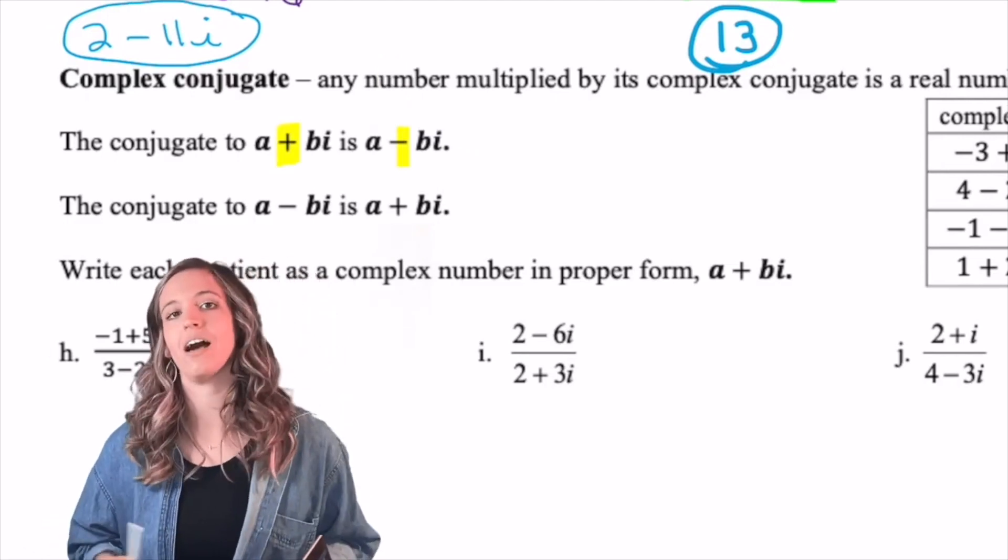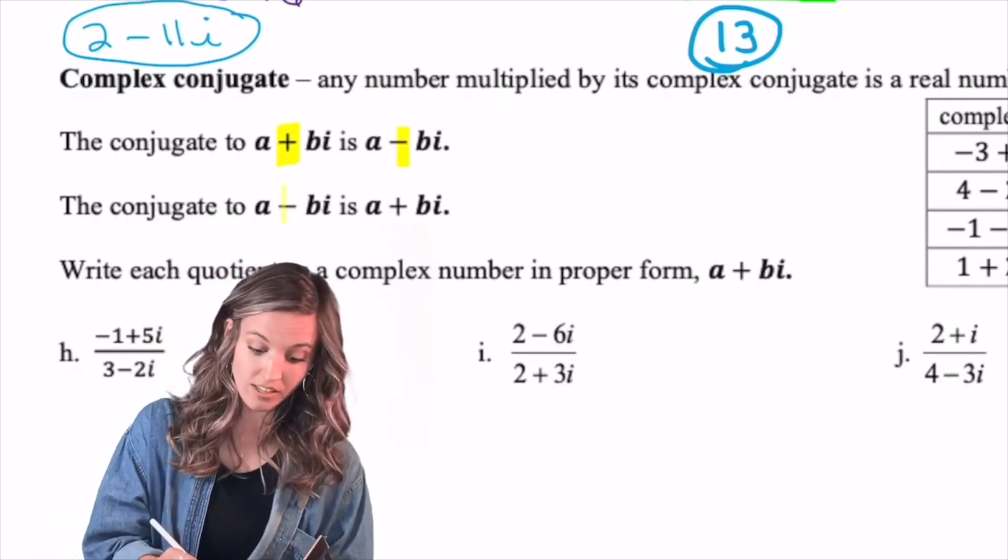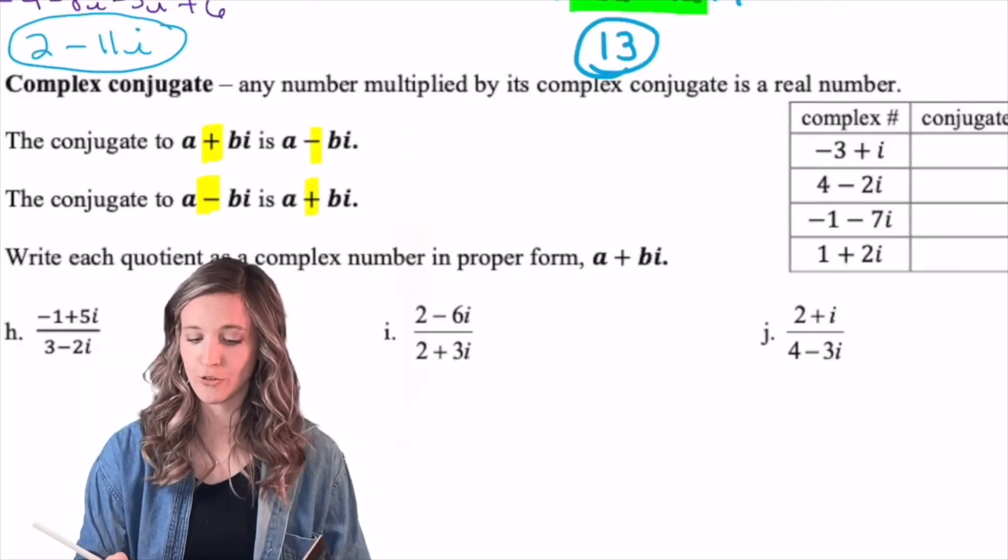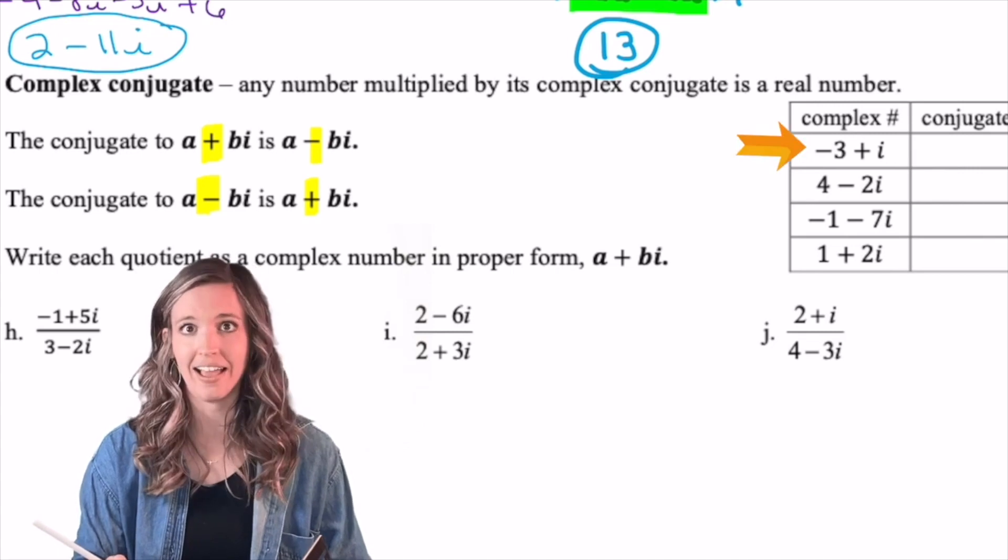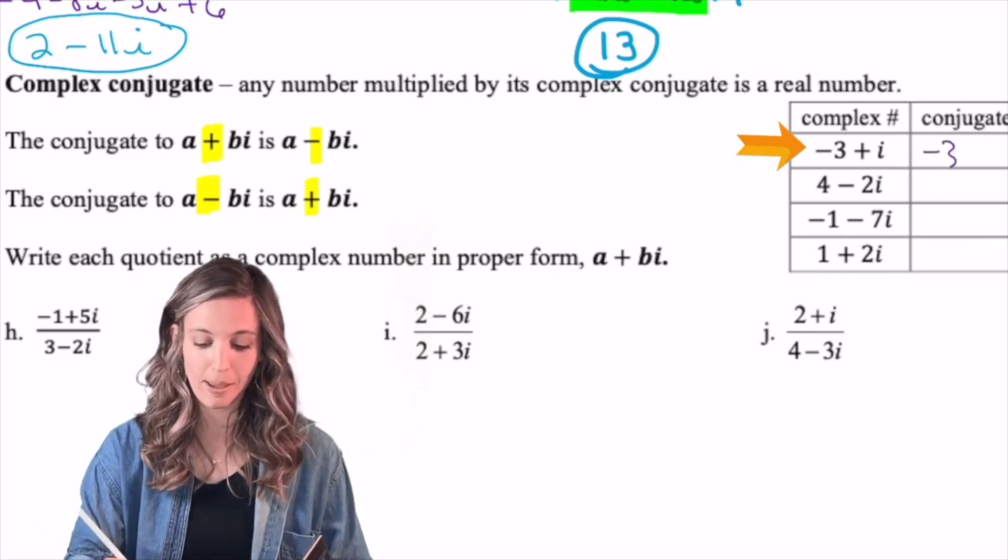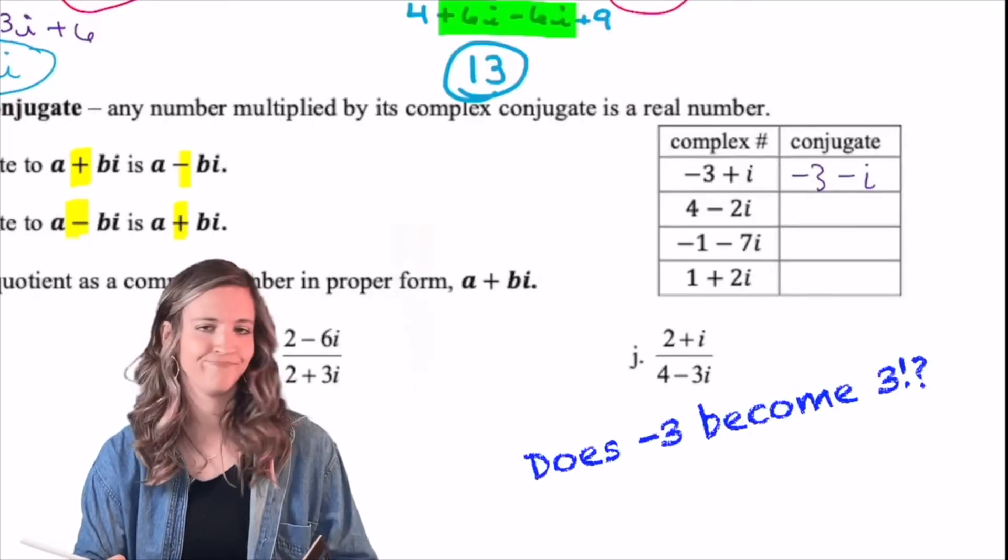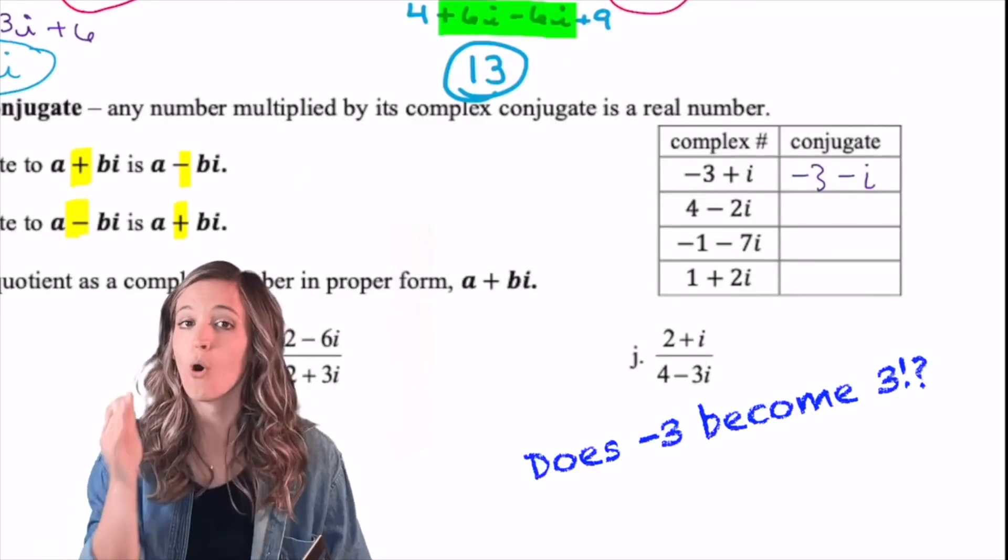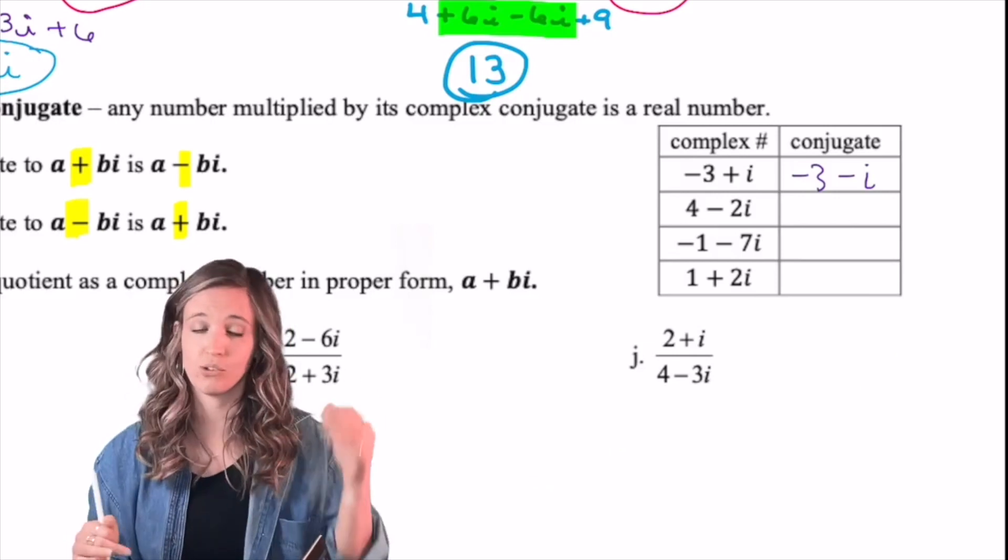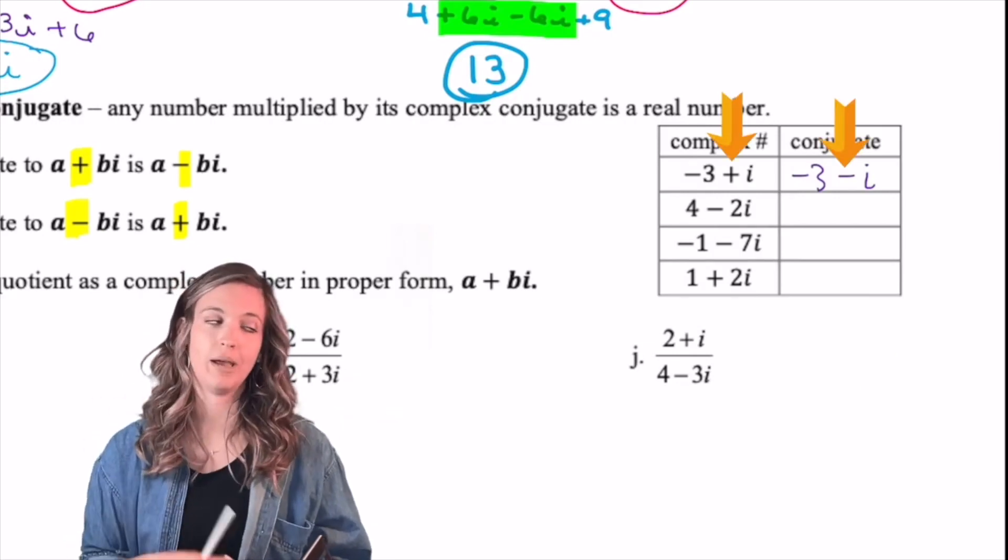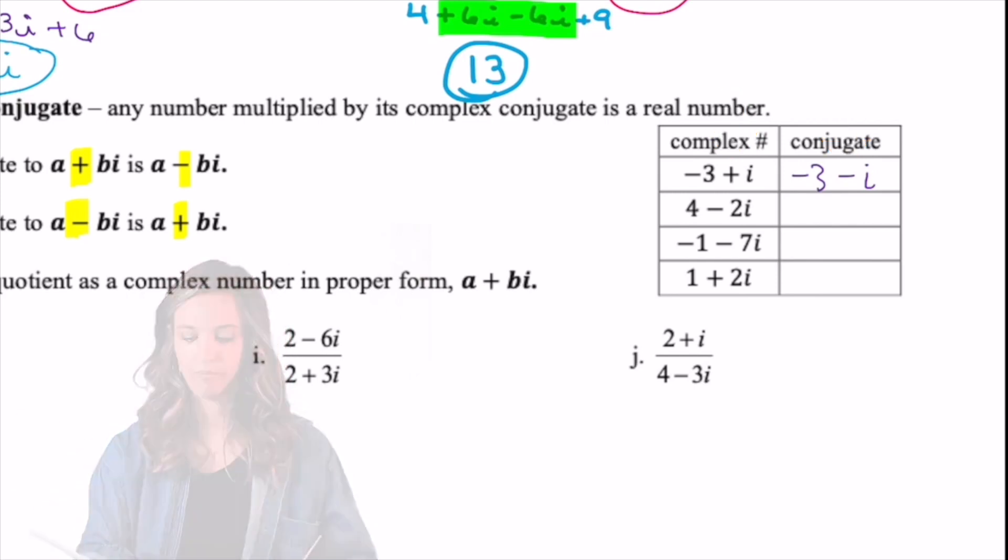So let's practice this. I'll do the first one. -3 + i. Its conjugate would be -3 - i. All I changed was the middle sign. Does negative 3 become 3? No, a conjugate is only that middle sign changing. So negative 3 stays negative 3. The plus in the middle changes to minus. You do the next 3. Check those conjugates.